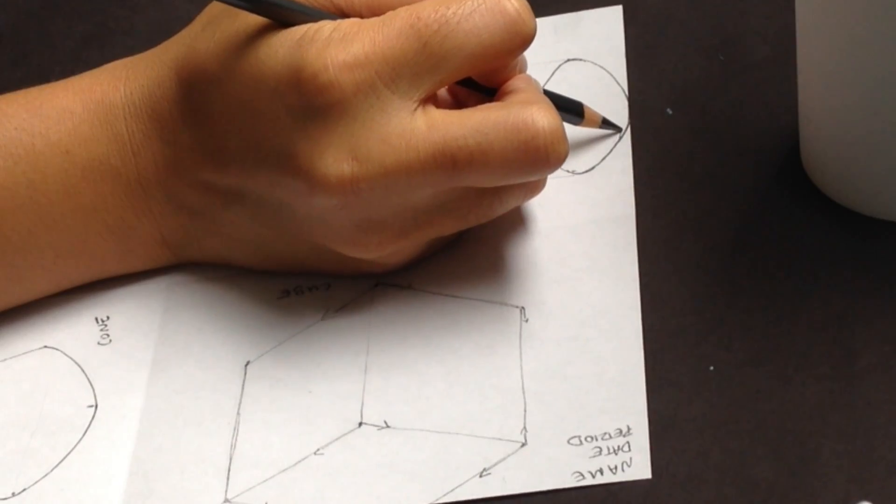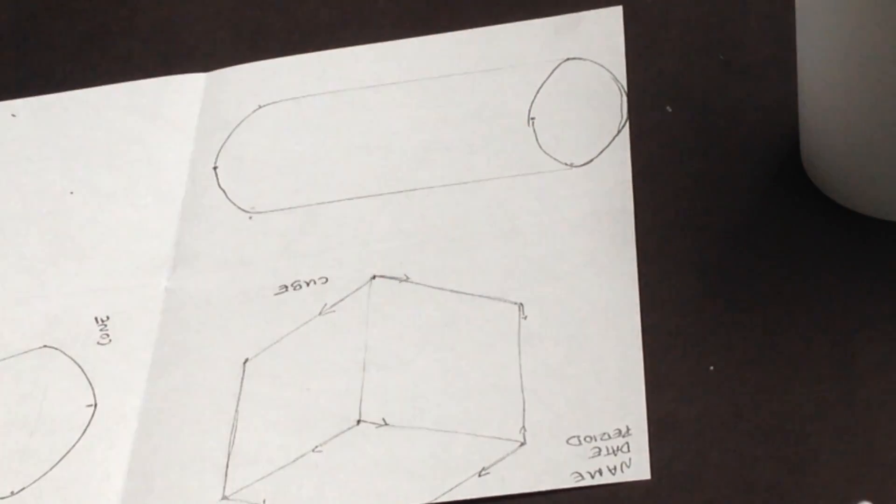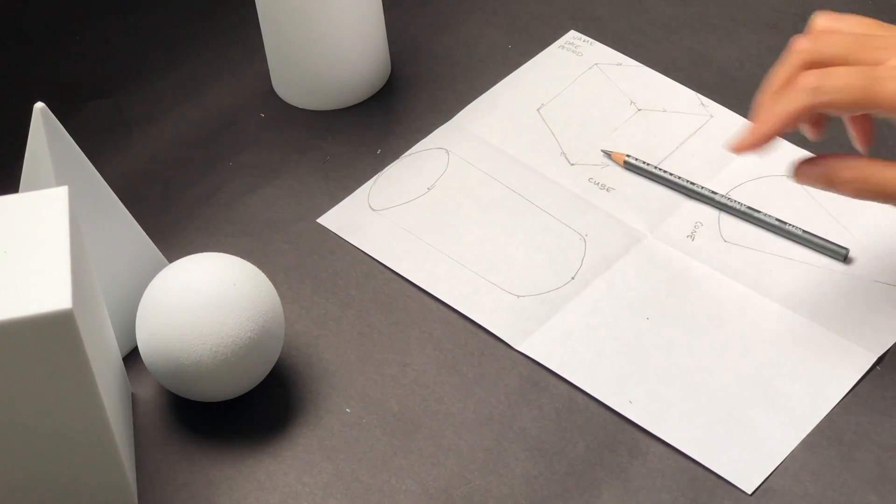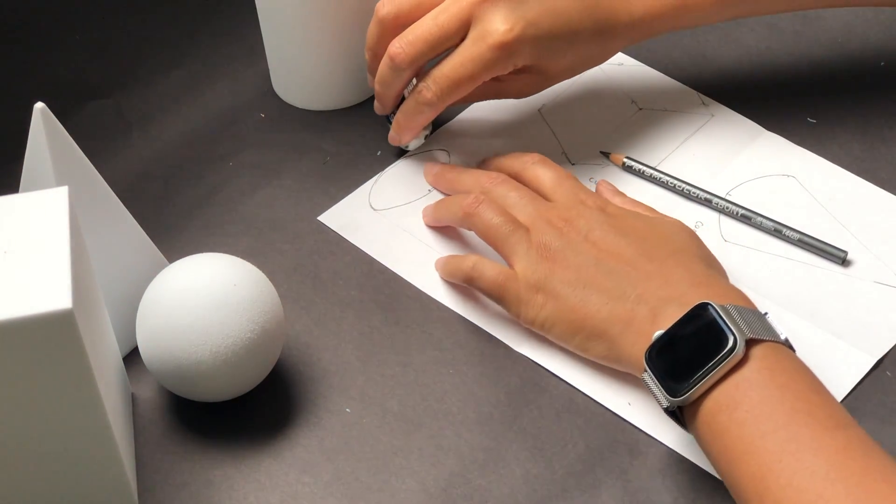At this time, check for proportion of your cylinder. Make sure everything's lined up and you have nice smooth edges. Make adjustments as necessary.